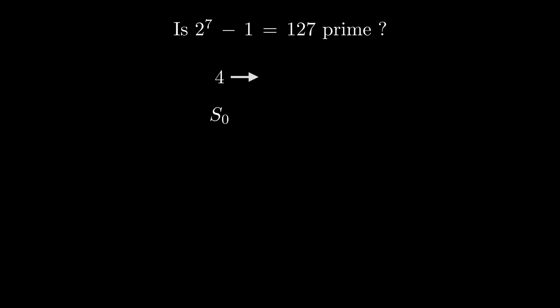s_1 is 14, s_2 is 194. And now we can reduce it modulo 127, leaving 64, which we square, subtract 2, simplify modulo 127, and so on.